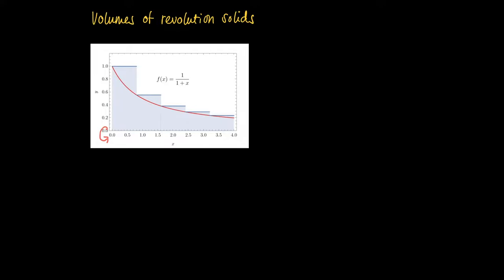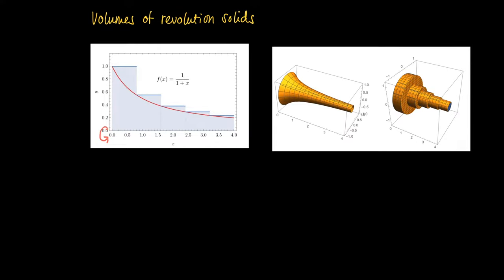Suppose I have a function f = 1/(1+x) and we rotate its graph around the x-axis. Then we get a volume V, and we may approximate like before by cylinders.